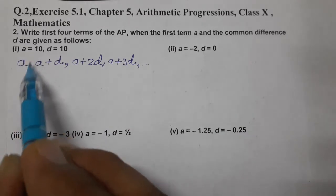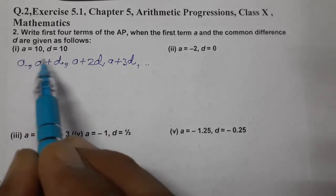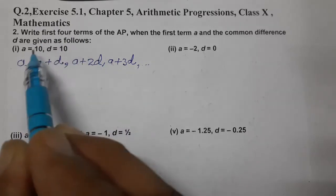Bas now hain is mein value substitute karna hi hain and we will get the AP. Kyunki humein first 4 terms likhne hain, we are first, second, third or fourth. So, rakh dete hain values.